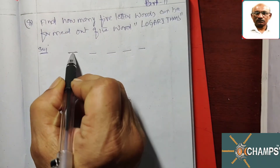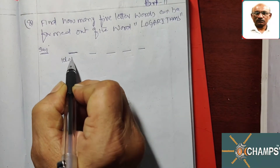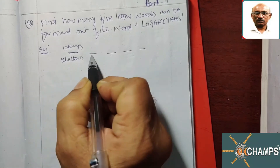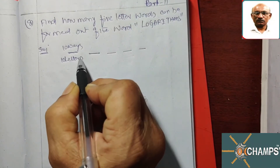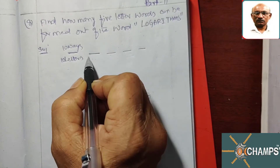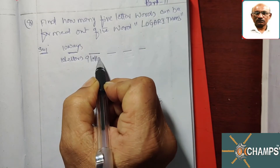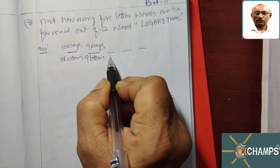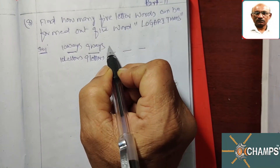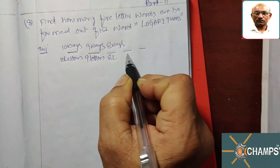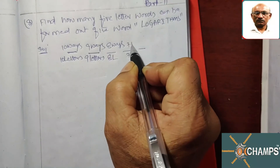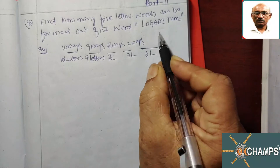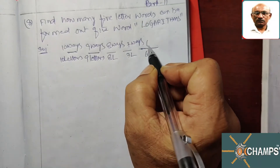For the first place, 10 letters are available, so this place can be filled in 10 ways. For the second place, 9 letters are available — filled in 9 ways. Then 8 letters are available, filled in 8 ways. Then 7 ways. For the last place, 6 letters are available, filled in 6 ways.